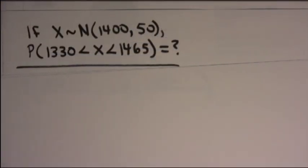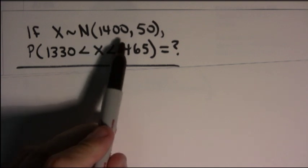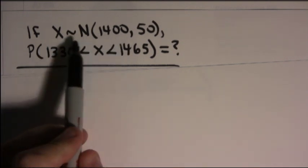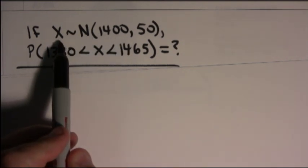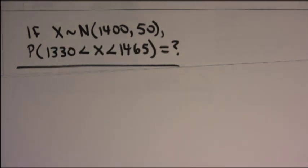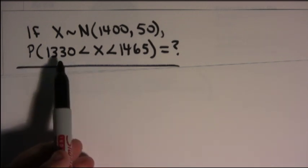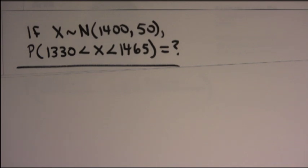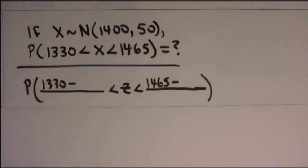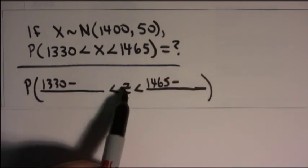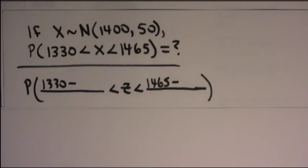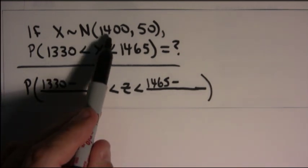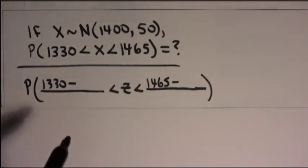And then, to sort of wrap up this set of simple examples, suppose you were giving a normal random variable that wasn't standard normal. This random variable is normal with a mean of 1400 and a standard deviation of 50. And I think you can already answer this. If I want to know the probability that x was between 1330 and 1465, what you realize, I think, is that you first have to normalize it. You have to change the x to a z. And we've talked about how to do this in the past. All you do is subtract off the mean and divide by the standard deviation.